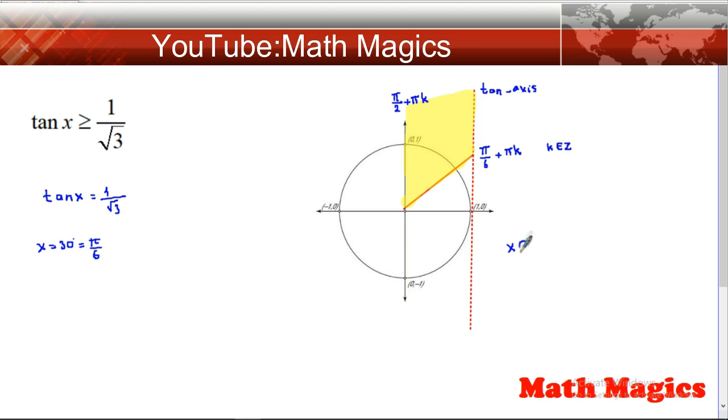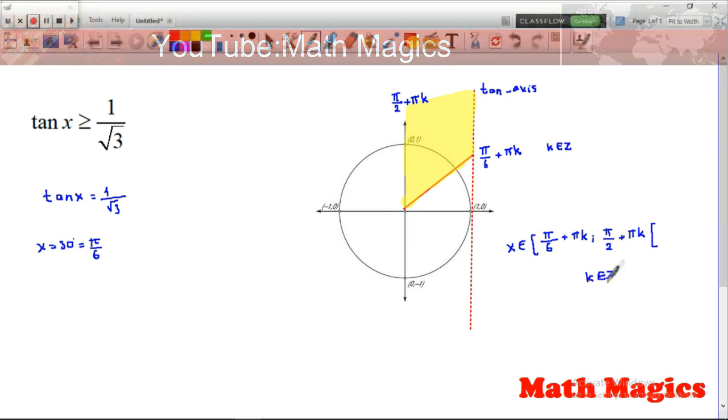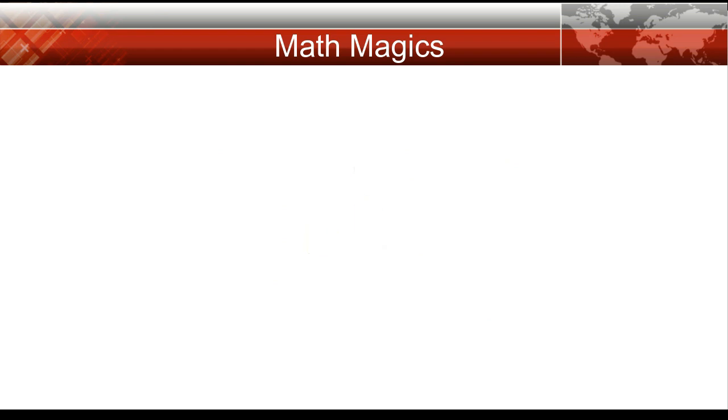It repeats infinity times, so the region we have is x element of π divided by 6 plus πk to π divided by 2 plus πk. And be careful, tangent is not defined at π divided by 2. Thank you very much, see you next time.